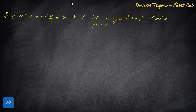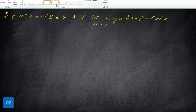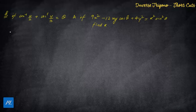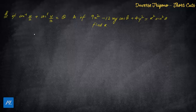The first question says: find the value of k. It's a very famous problem — if cos inverse (x/2) plus cos inverse (y/3) equals theta, and 9x² minus 12xy equals k times something, you need to find the value of k. The normal method using alpha-beta angles takes around two minutes.